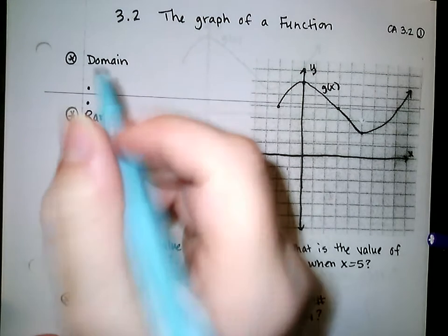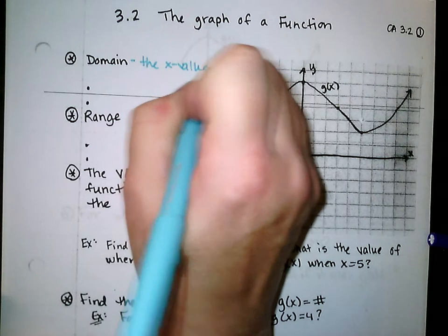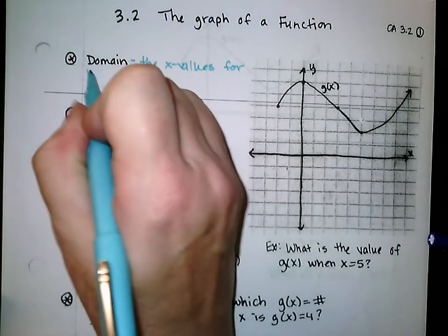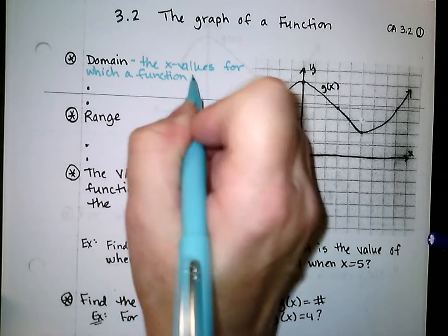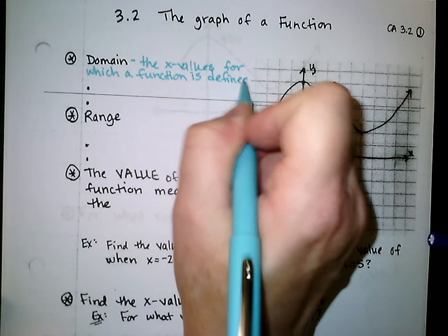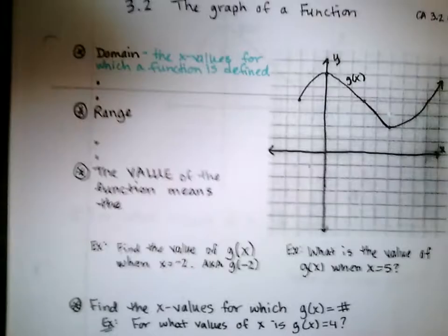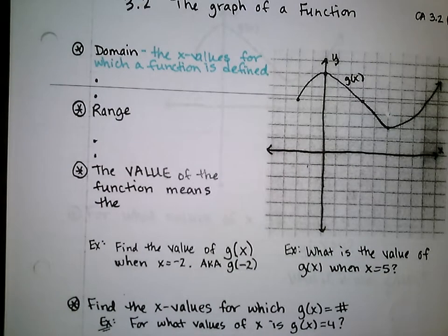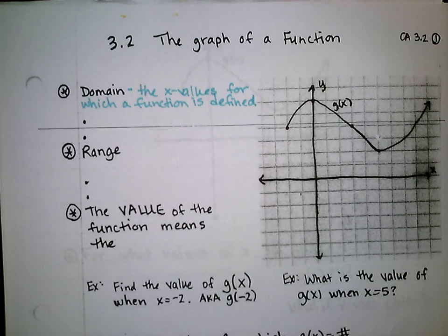First of all, let's talk about the domain. The domain is the x values for which a function is defined. We've talked about domain in the past and how to find it algebraically. If we have a square root function, we set the radicand greater than or equal to 0. If we have variables in the denominator, we set the denominator not equal to 0. But here we don't have any kind of equation — we just have a picture.